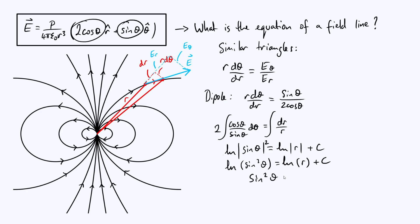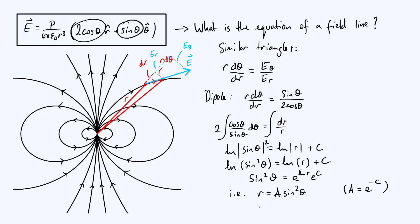The left side becomes sin²θ and the right side becomes e^(ln r) times e^c, which is just r times e^c. Defining a new constant a = e^(-c), we find the equation of a dipole field line is r = a·sin²θ. Any field line for an electric dipole takes this form, and the different field lines seen in the diagram each correspond to a particular value of the constant a.